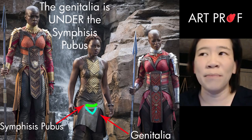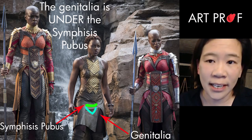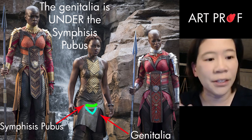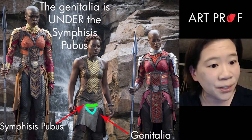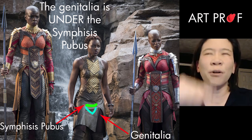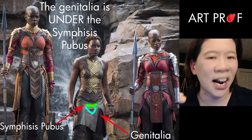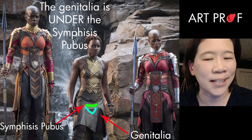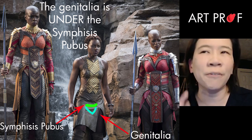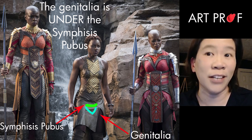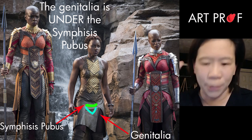The other thing that people mess up all the time is that the genitalia on both the male and female figure is underneath the symphysis pubis. People oftentimes will put the genitalia too high — that's the more common mistake I see. People don't usually put it too low, but I'll see people put the genitalia on the symphysis pubis, which it's not. It's below.